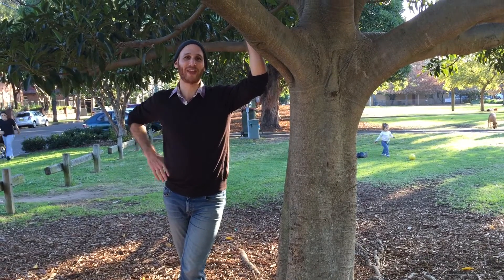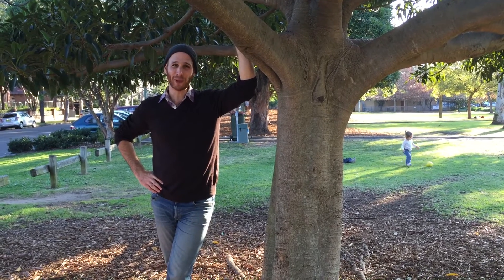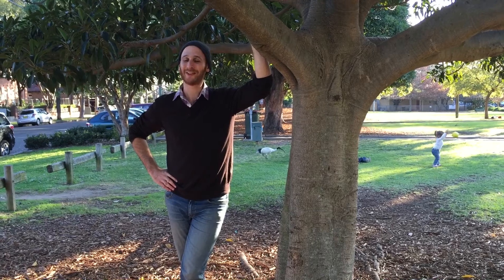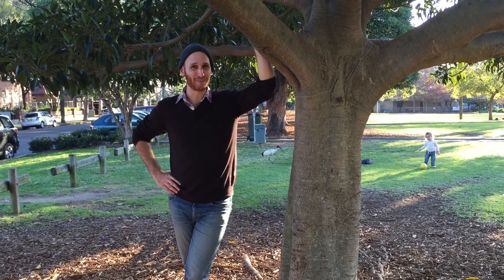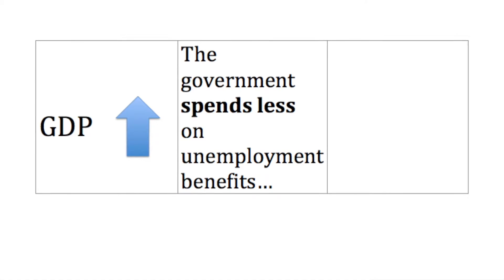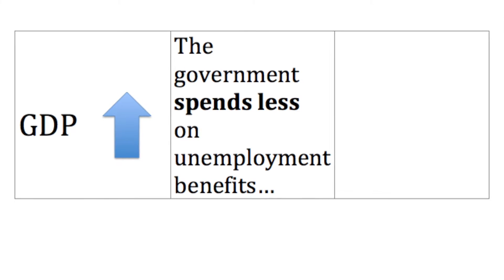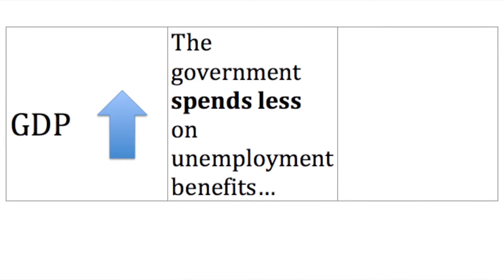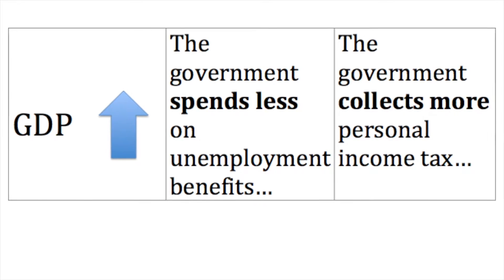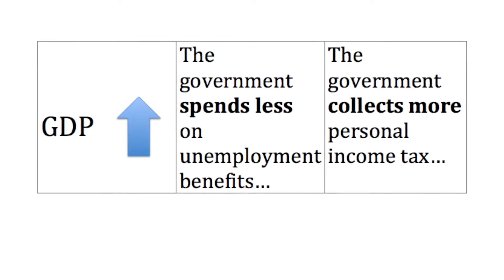Let's take an example. Imagine the economy is booming: GDP is growing, more people are finding work, and unemployment is falling. It's a great time to be alive — you've got a job and more money in your pocket. Here, a couple of things happen automatically. The government automatically spends less on unemployment benefits, because more people have jobs. The government automatically collects more personal income tax, as more people are in work and earning money.